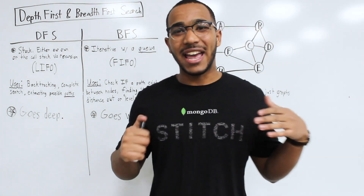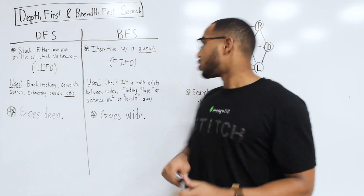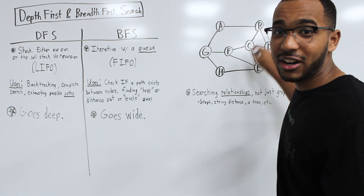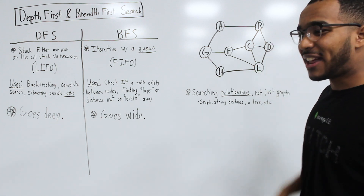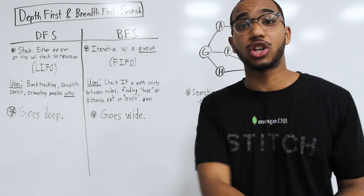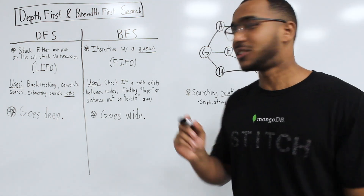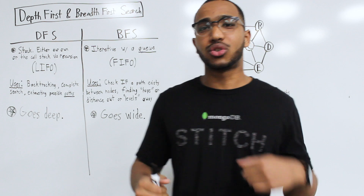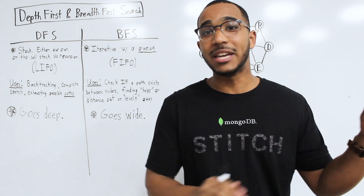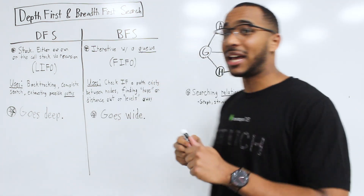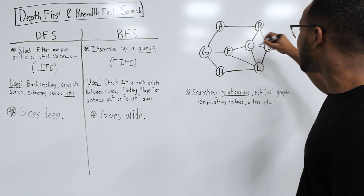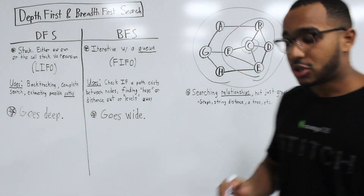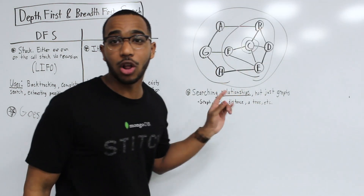Breadth first search is great for checking if there's a path between two nodes. If depth first search takes us all the way over here, it's going to get lost in its exhaustion of possibilities instead of noticing that a node was just two steps away. Depth first search will go too deep and get lost. Breadth first is about going out layer by layer — we start at a node and explore one step out, then two steps out.